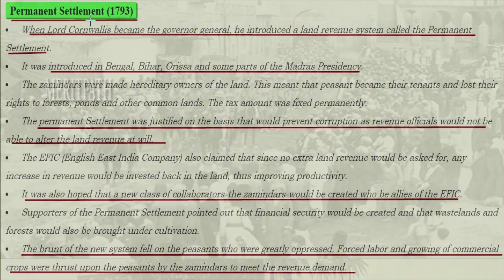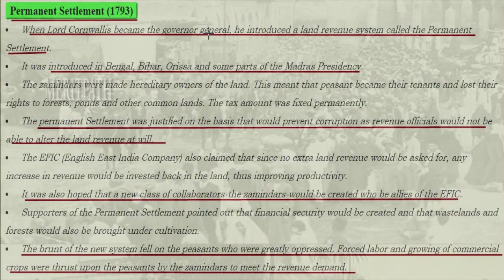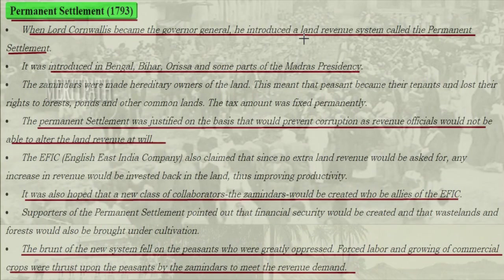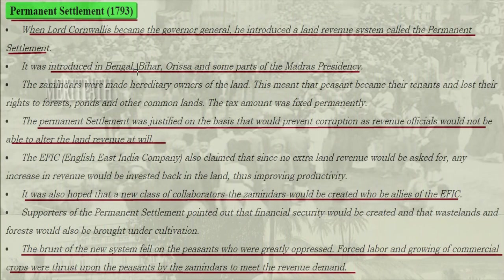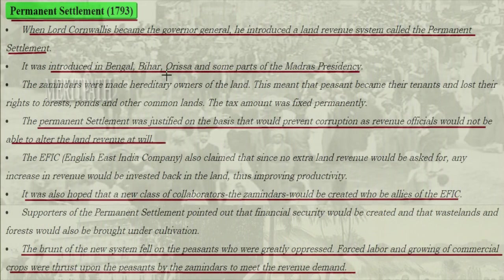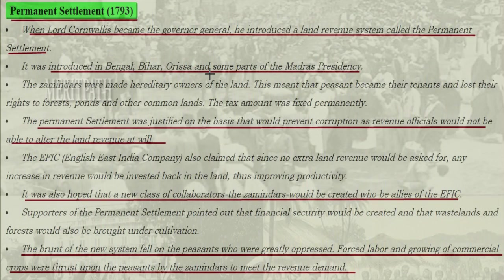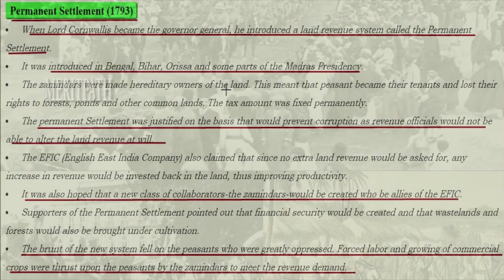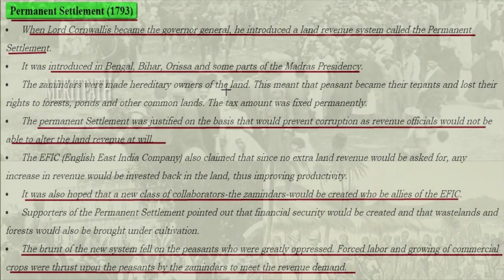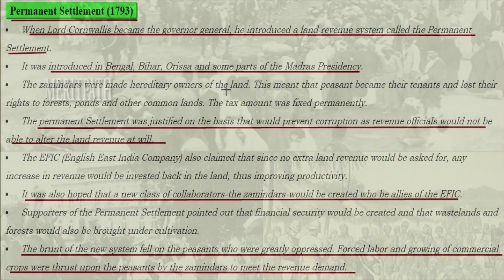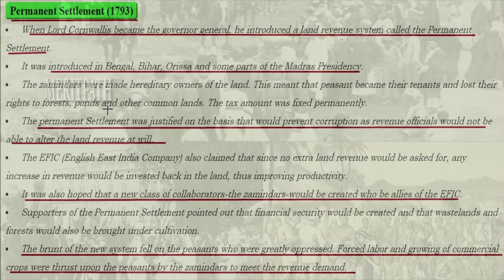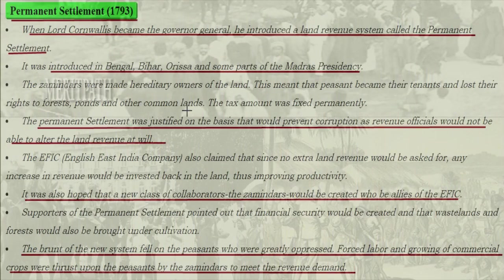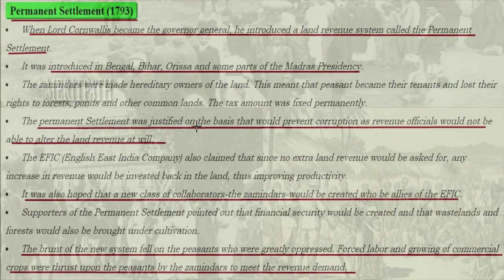Permanent Settlement, 1793: when Lord Cornwallis became the Governor-General, he introduced a land revenue system called Permanent Settlement. It was introduced in Bengal, Bihar, Orissa, and also some parts of the Madras Presidency. Zamindars were made the hereditary owners of the land, which meant that peasants became the tenants and lost their rights to forests, ponds and other common lands.